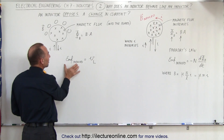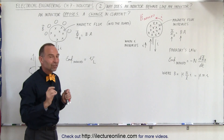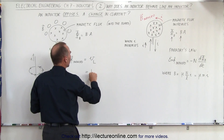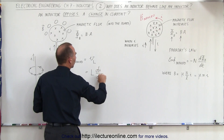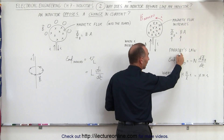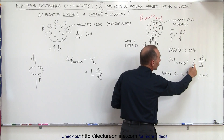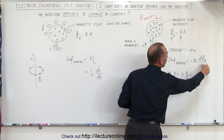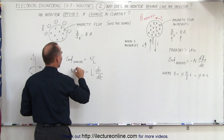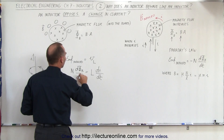The EMF induced is like a voltage induced on the coil — equal to the voltage across the inductor, V_L — which equals the inductance times the rate of change of the current with respect to time (L × dI/dt). According to Faraday's law, the EMF induced equals the number of loops N times the change of flux through the loop per unit time (N × dΦ/dt).